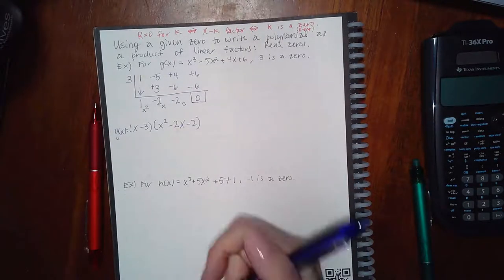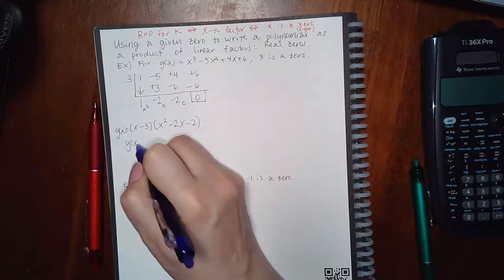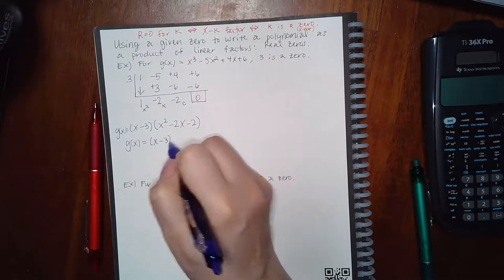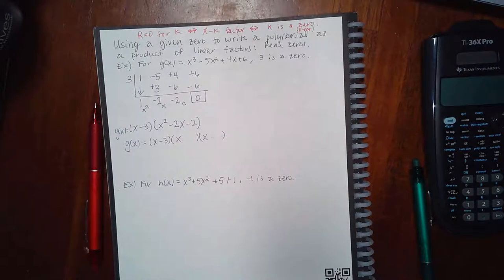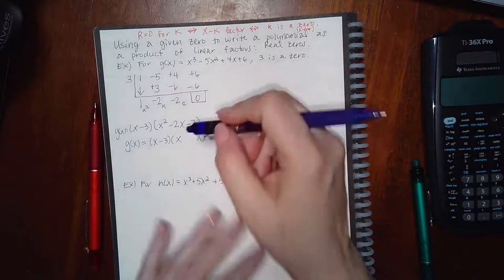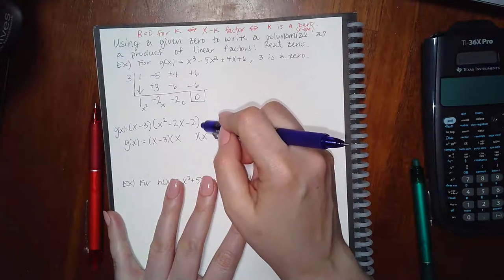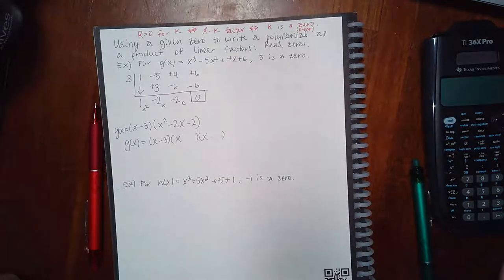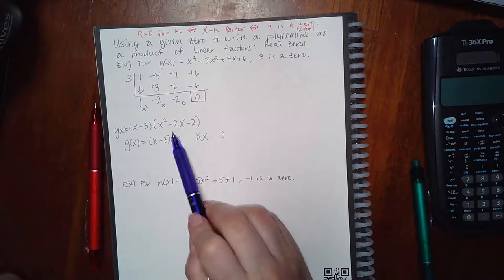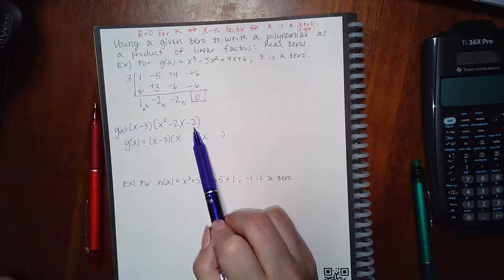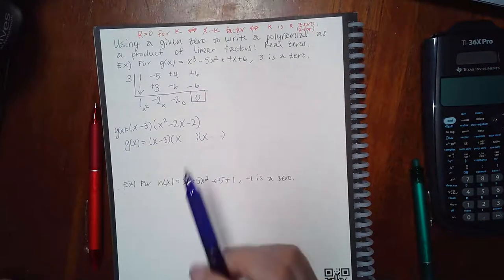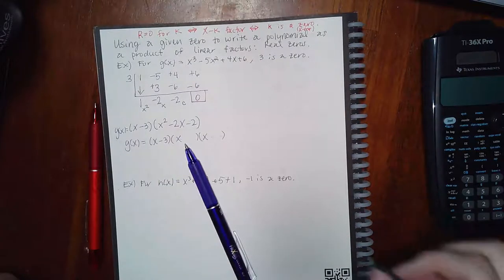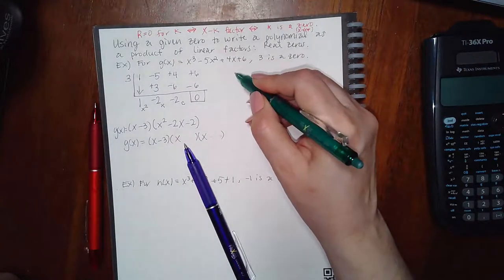Now we have to factor this further. Since all I have left is a quadratic, I should be able to factor it easily using factoring skills. However, I don't believe x² − 2x − 2 can be factored, because there are no factors of 2 that subtract to give me 2. But I can still factor it — it's just going to look weird. I'll use the quadratic formula.